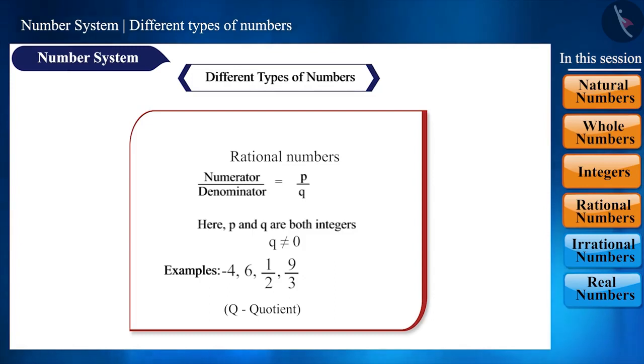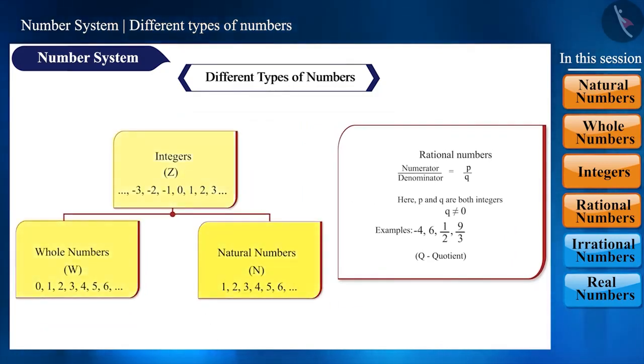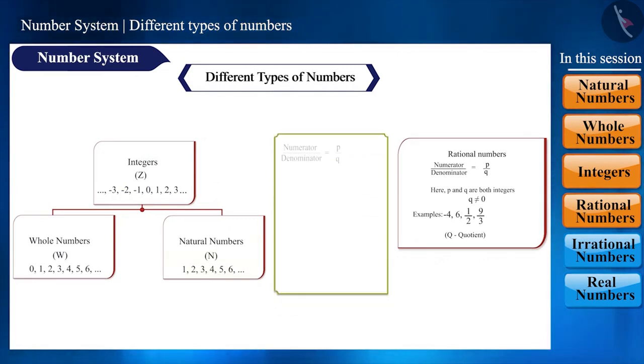Friends, if we pay attention to the definition, why is it said that Q should not be 0? And can we call all the numbers seen so far as rational numbers?